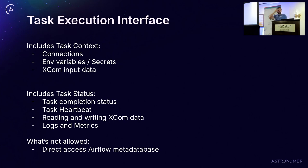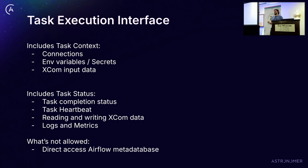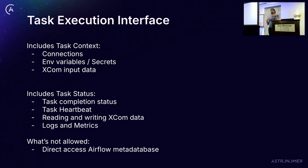The task execution interface includes all the task context — the big context dictionary, the task instance, your DAG, your DAG run, and all kinds of access like that. It also contains access to Airflow variables and particularly secrets. One of the problems right now is that a task with direct database access can read every single secret in Airflow — you either have access or you have nothing. With everything going via an API, you can put controls in place. You can say this DAG should only have access to this specific secret, and even a specific task should only have access to a specific secret. This plays into multi-tenancy and multi-team scenarios.